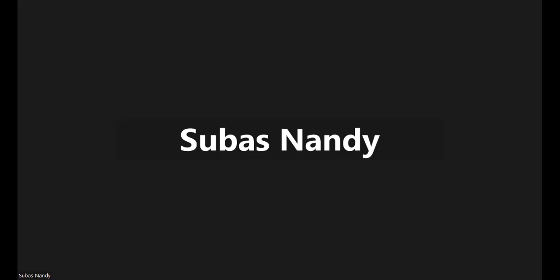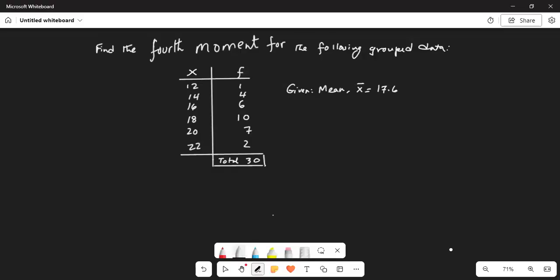So here I go. It says find the fourth moment for the following group data. So we have the numbers corresponding frequencies and we have been given the mean of this distribution. So we will write the fourth moment.